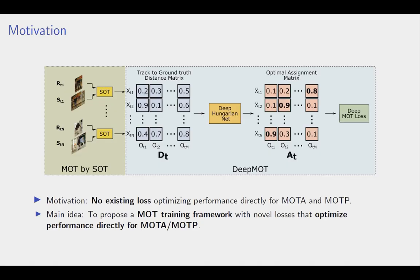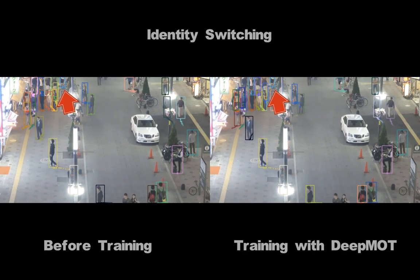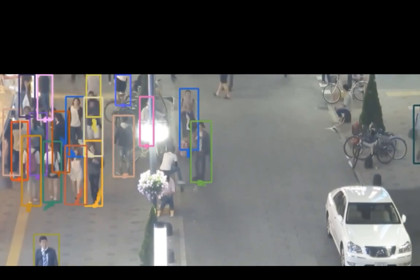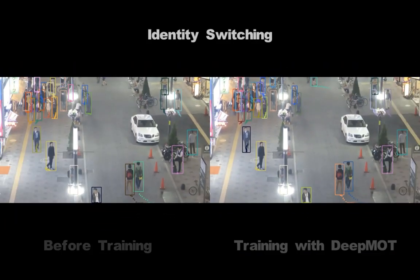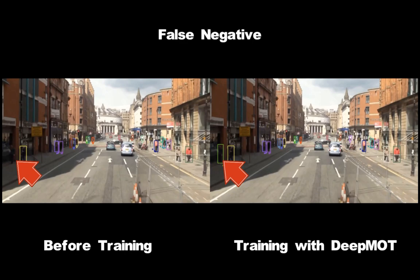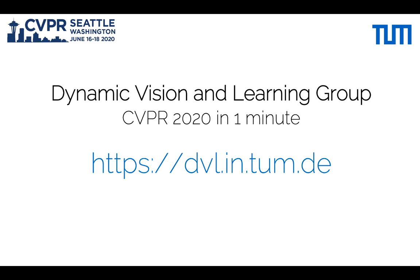In this paper, we proposed a mode training framework directly derived from MOTA and MOTP metrics. We used the approximated and differentiable MOTA and MOTP as losses and backpropagated the gradient to the deep mode tracker, through the differentiable deep Hungarian nets, replacing the Hungarian algorithm. To know more about our research, do not hesitate to visit our website.